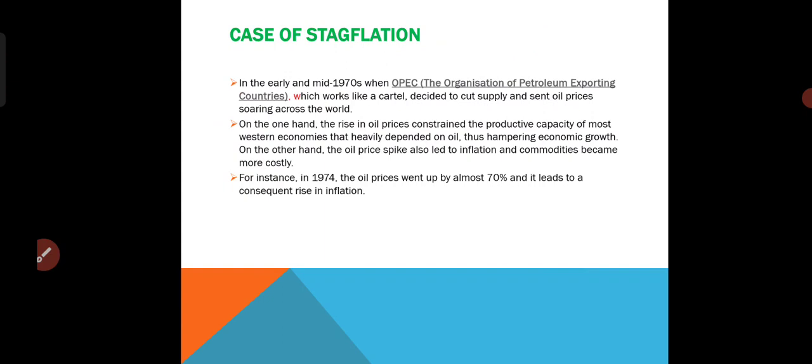Let us take a case study. In the early to mid 1970s, related to stagflation, when OPEC — the Organization of Petrol Exporting Countries — which works like a cartel. A cartel is nothing but a group of individuals who get together and try to control prices and get profit. That is what we can simply call an oligopoly market — a few firms or a group of firms organize a particular product.